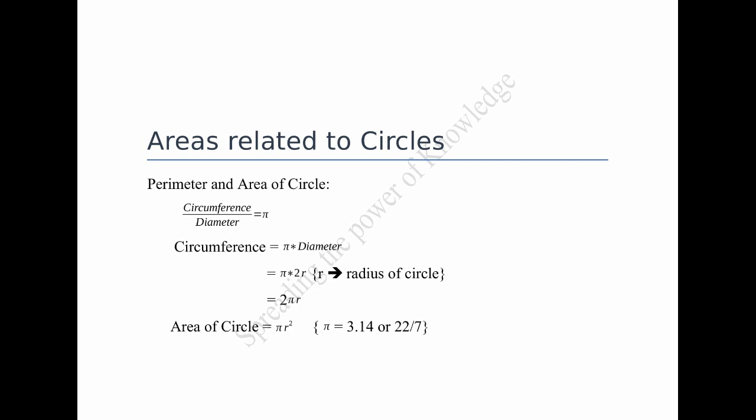Therefore, circumference equal to pi into diameter which is equal to pi into 2R. Here, R is the radius of the circle which is equal to 2 pi R. The approximate value of pi equal to 3.14 or 22 divided by 7. Then, area of circle equal to pi R square.